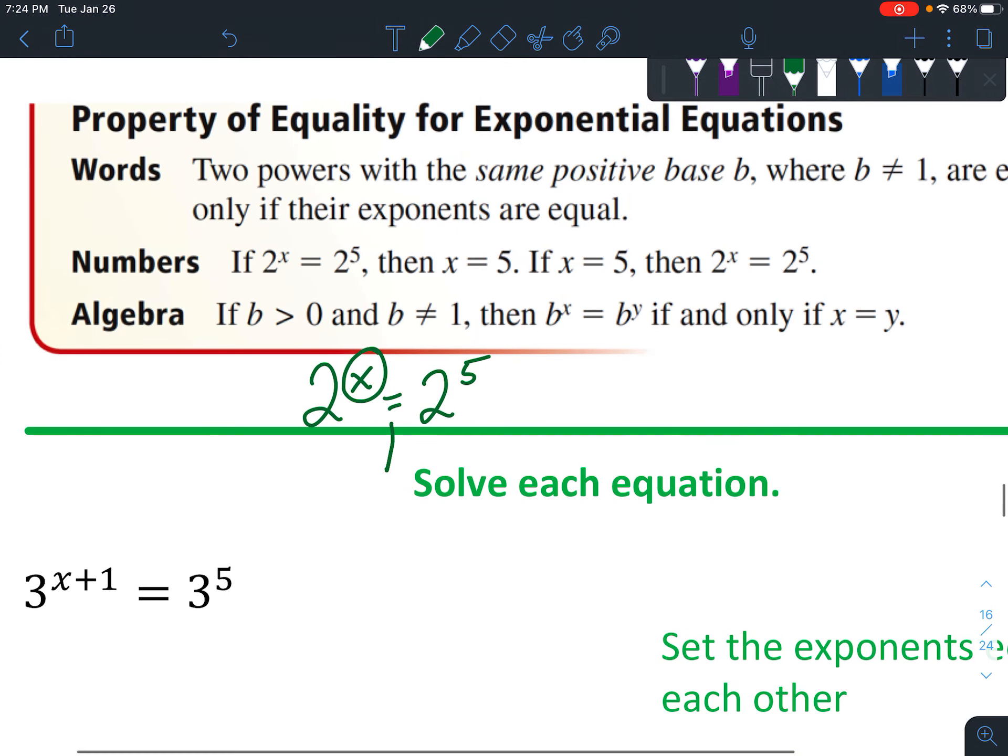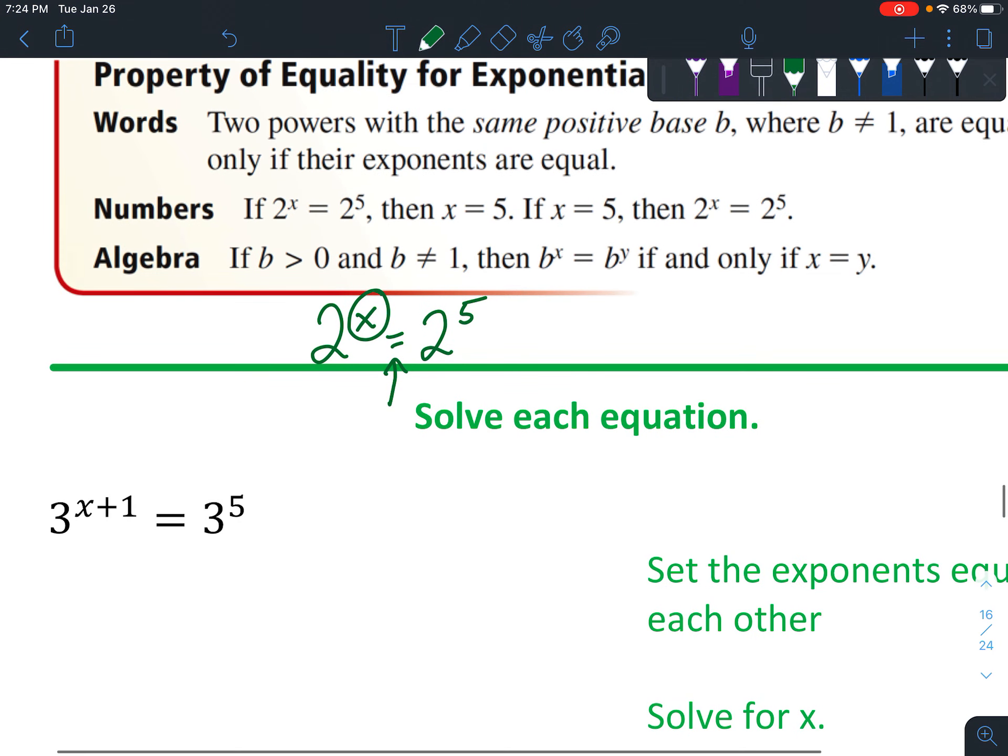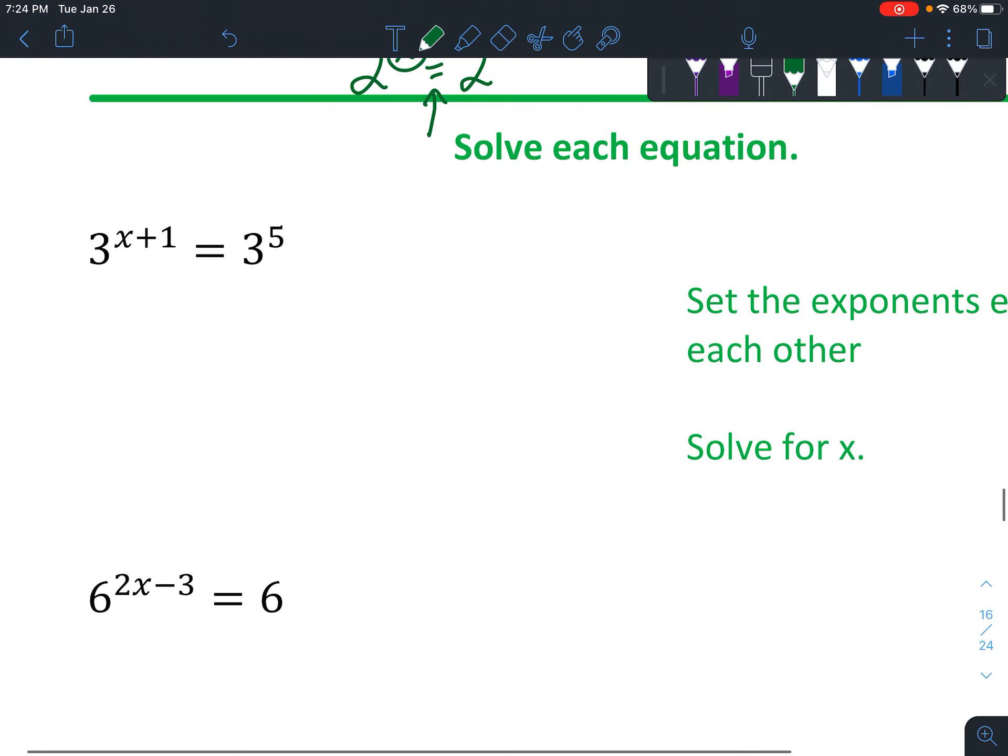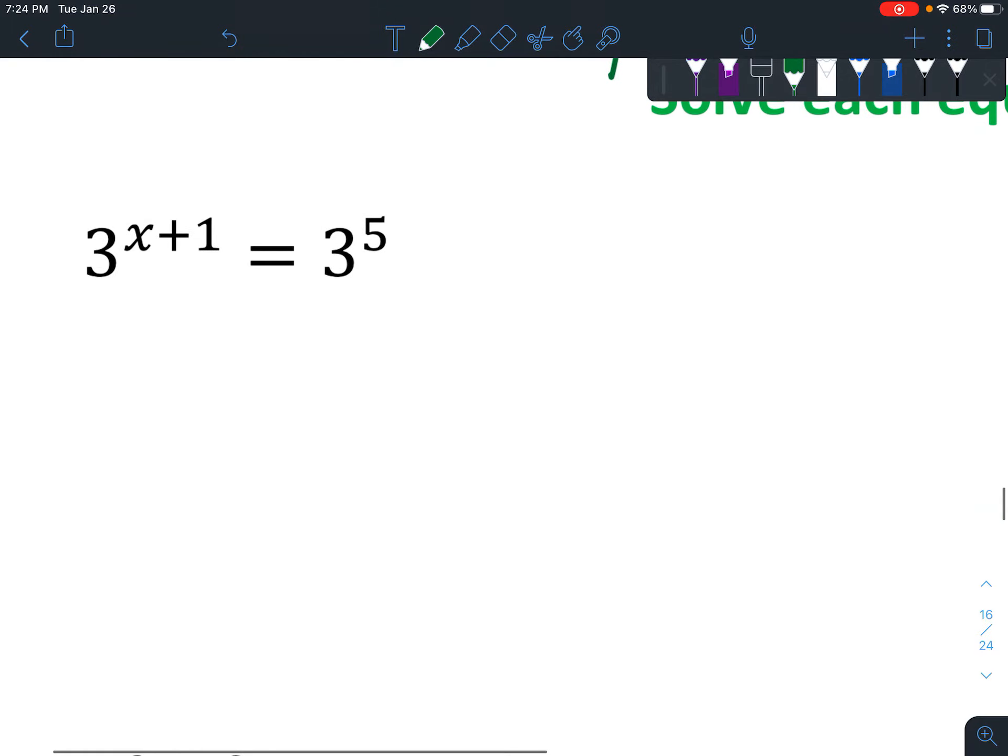So this is a property that can help you solve some of these equations. So 3^(x+1) = 3^5. As soon as you see that the bases are the same...